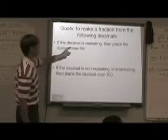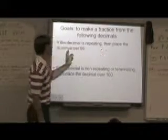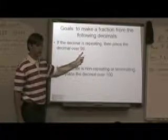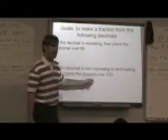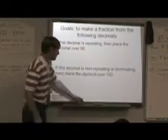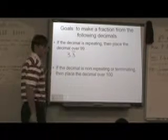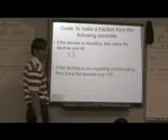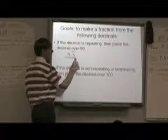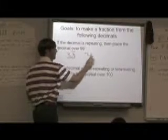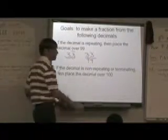You can read the rules. If the decimal is repeating, which means it's non-terminating, then place the decimal over 99. If the decimal is non-repeating or terminating, place it over 100. So if it's non-terminating, you'd make it a percent, move the decimal two to the right, and put it over 99. Then you would reduce: 33 over 99 reduces to 1/3.